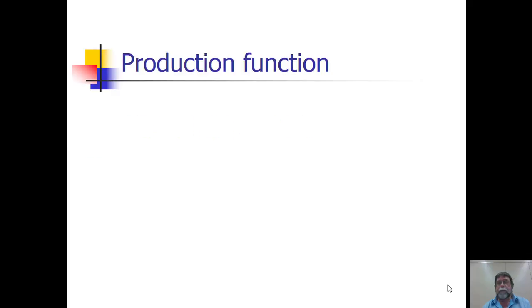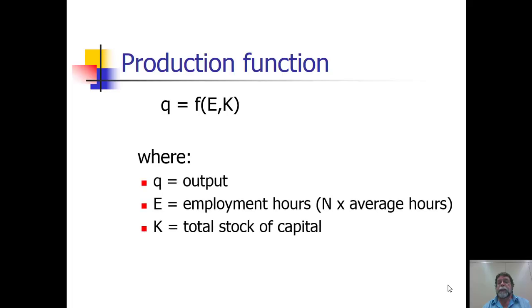To begin this discussion, it will be helpful if we talk about a production function. We can write a production function as Q equals F of E and K, where Q is the level of output, E is the level of employment hours, which we'll initially assume is just the number of workers times average hours worked, and K is the amount of capital.